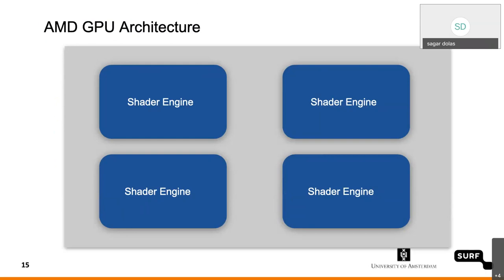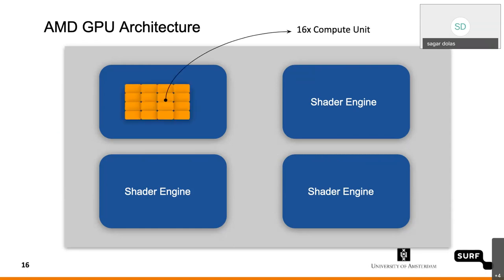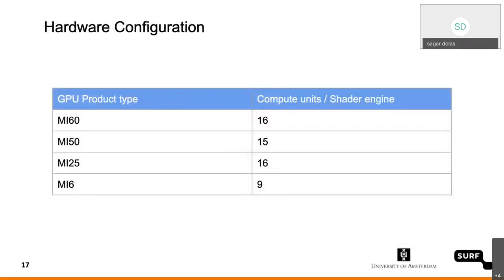In a very basic overview, AMD GPUs have four shader engines. It's very different from NVIDIA GPUs — whenever we talk about GPUs, the first instinct is NVIDIA. But in terms of AMD, it's radically different. It consists of shader engines coming from the gaming legacy, and each of these shader engines has 16 compute units. The compute unit in AMD terminology is similar to streaming multiprocessors in NVIDIA. The product type we are talking about is the MI product line, and the architecture is Vega — specifically Vega 20.